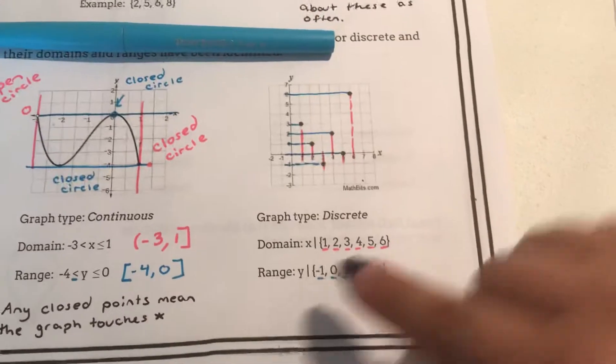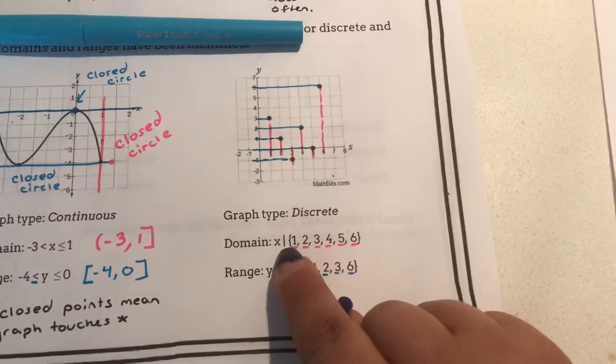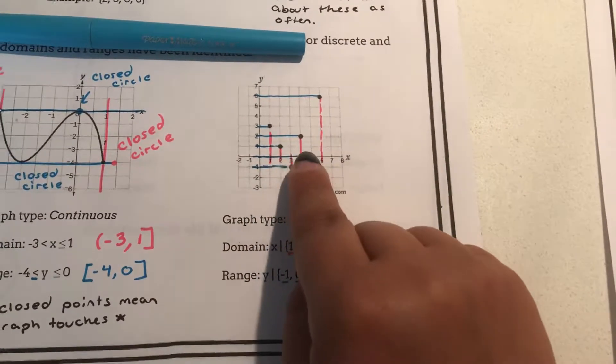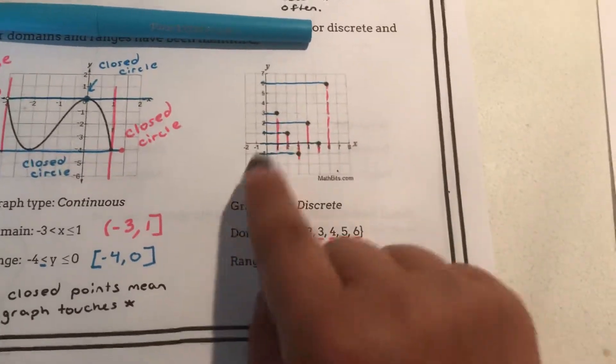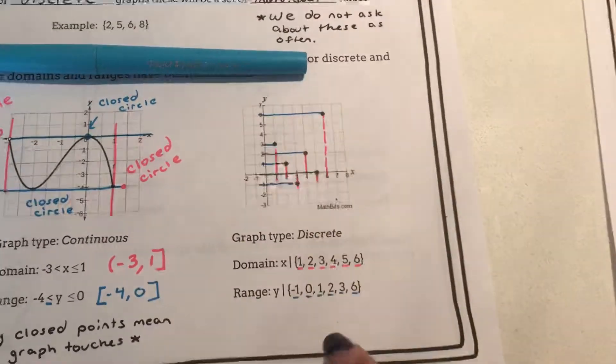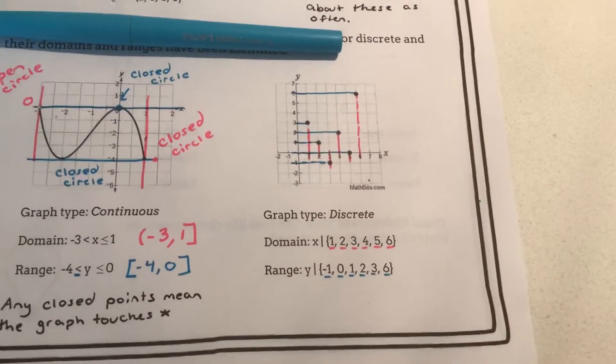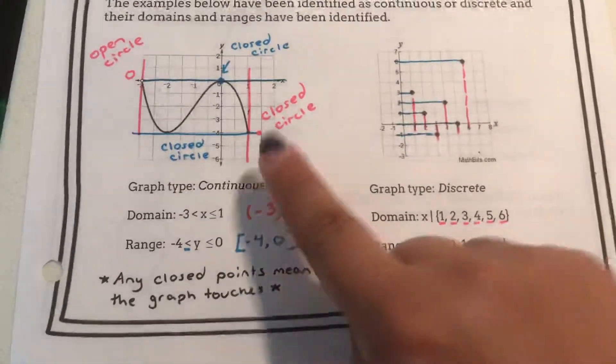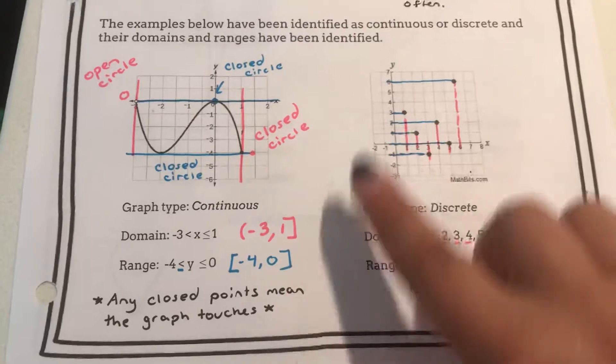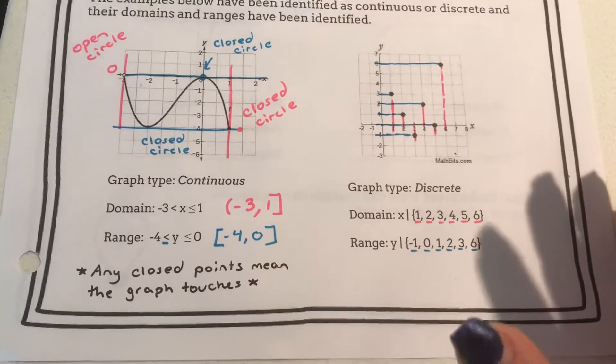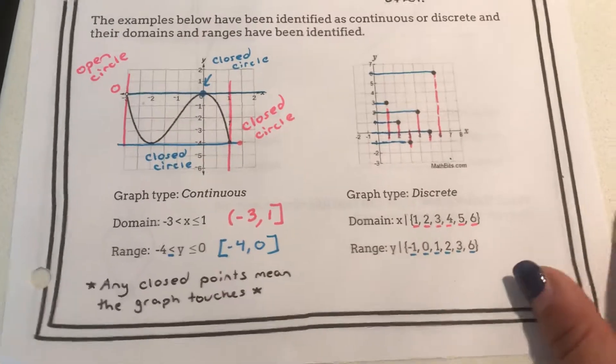As previously stated for discrete graphs we use these curly brackets to say that these are the set of values that exist. And curly brackets for range that these are the sets of values that exist. More often your graphs will be continuous. However discrete does come up in several real-world situations.